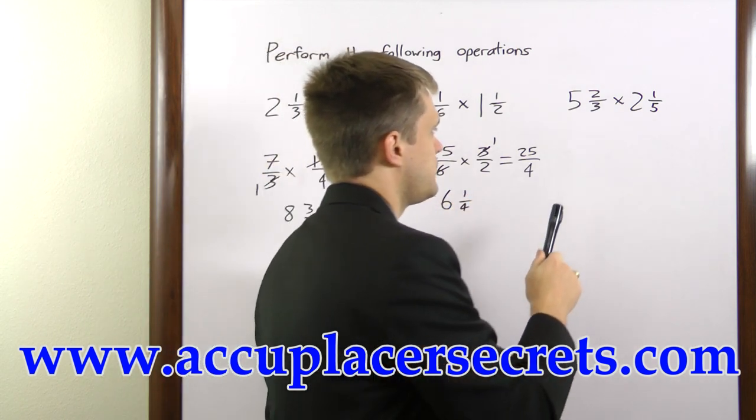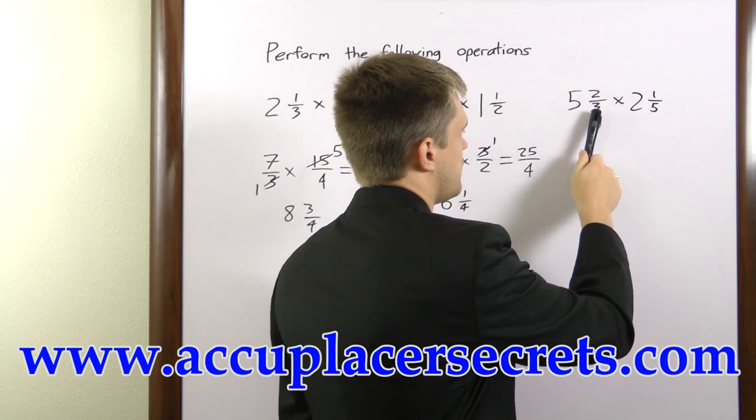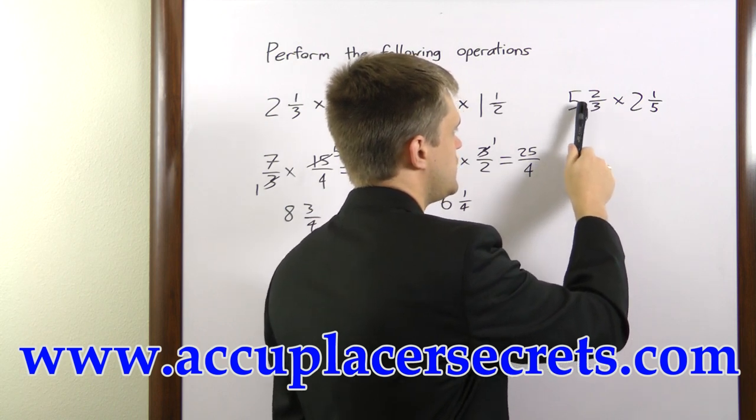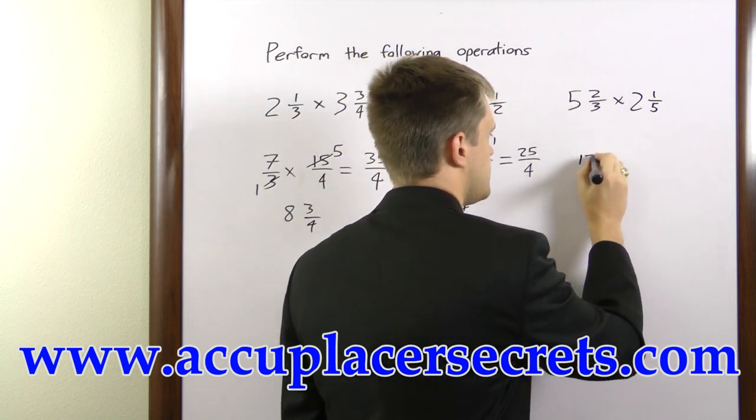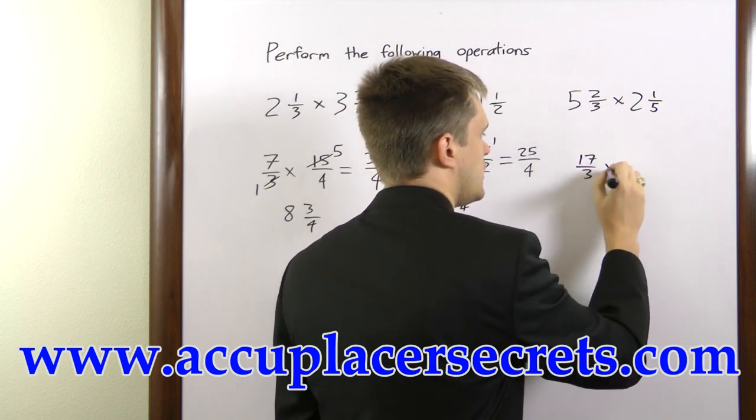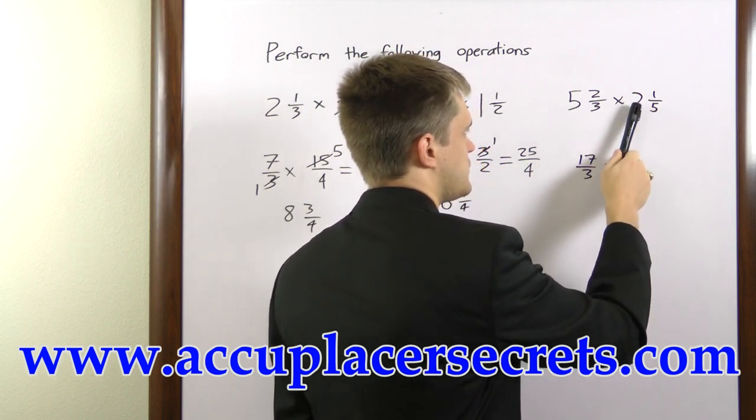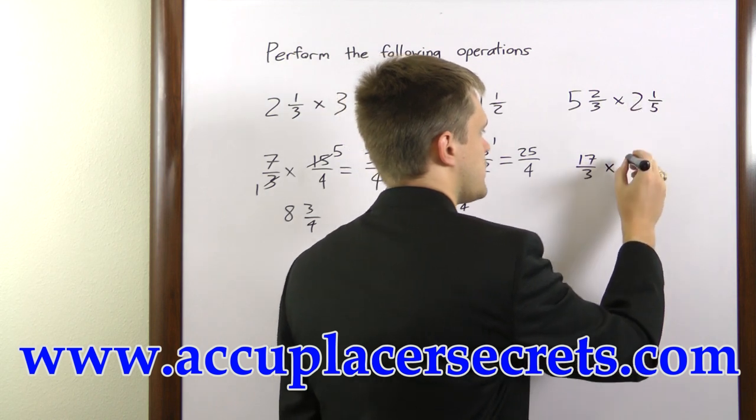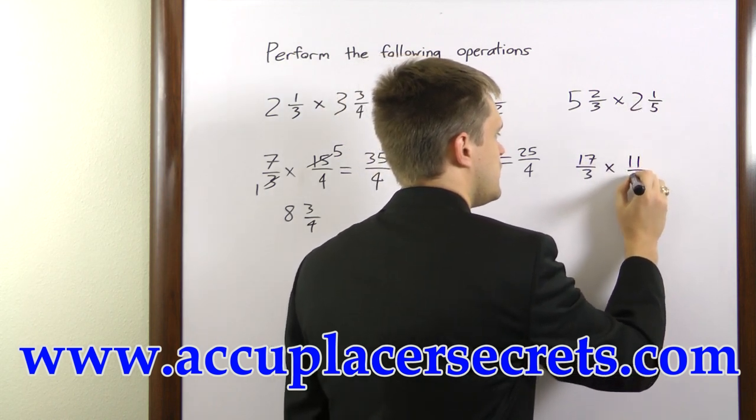The final example here, we have 3 times 5 is 15, plus 2 is 17, 17/3 times 5 times 2 is 10, plus 1 is 11, 11/5.